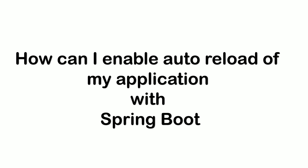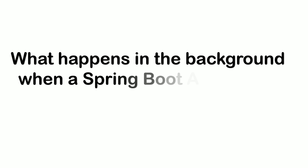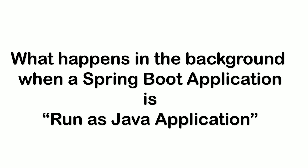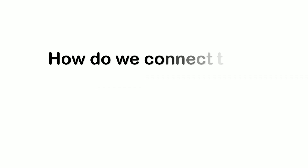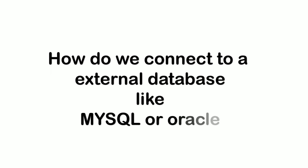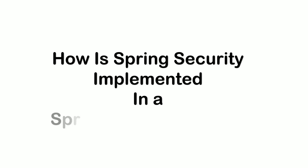The next question was: what happens in the background when a Spring Boot application is run as a Java application — when you right-click on the main class and run it? I explained in detail how the execution starts, what annotations come into picture, when classes get loaded, and the entire process. He was very impressed with this answer. Then: how do you connect to an external database like MySQL or Oracle? This is a very easy question if you have good hands-on experience with Spring Boot.